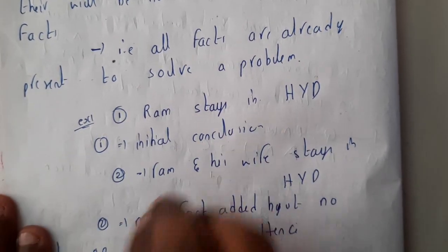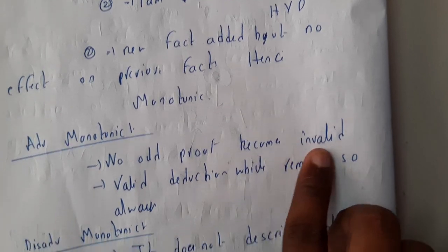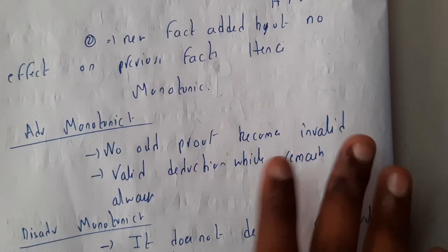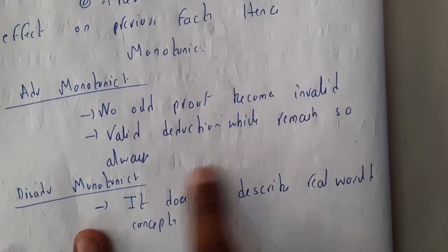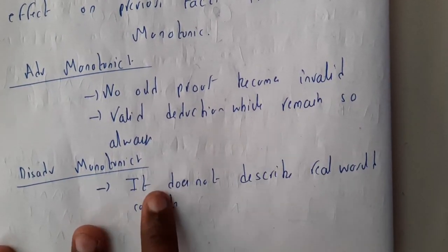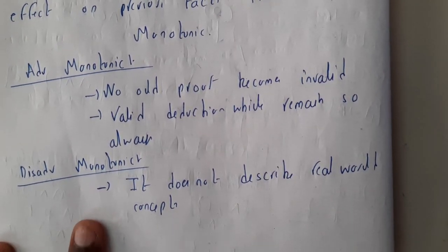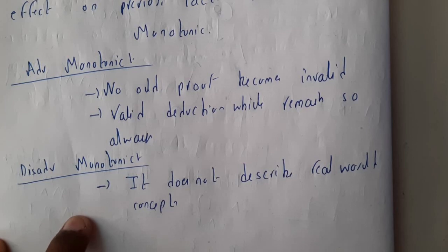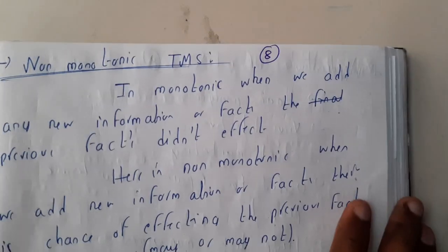Advantages of monotonic: no old proof becomes invalid, so every proof will be satisfied and will be true. Valid deductions will always remain the same. And the disadvantage is that it does not describe real world concepts, so real world concepts cannot be described by using this monotonic because they may change. Are there any fixed things that will be constant forever? No, they can change. So that is the reason why monotonic is not so efficient in that particular sense.